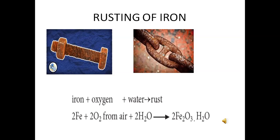The process of forming rust is represented as: Fe (iron) + O₂ (oxygen from air) + H₂O (water) → Fe₂O₃·H₂O (rust). So, iron plus oxygen plus water gives rust: 2Fe + 2O₂ + 2H₂O → 2Fe₂O₃·H₂O.